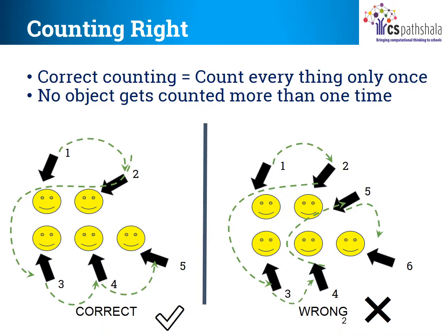Now look at the smileys on the right-hand side. Notice the dotted path. Someone who is going to make a mistake and count wrong will follow this dotted path. Can you see that one smiley got counted more than once? So we'll get a wrong answer which is 6. But the correct answer is 5.